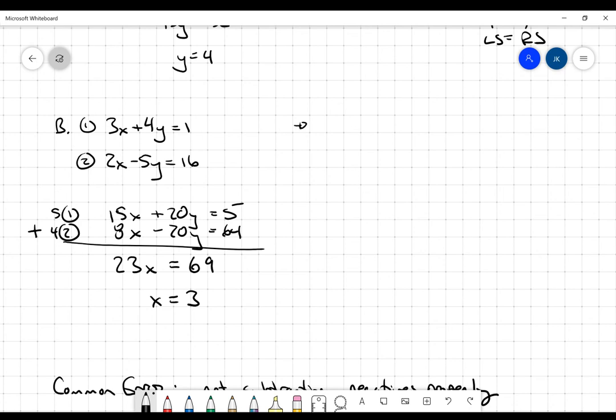So now I can take that and I can plug that result here. And I might go back into equation 1 again. So let x be equal to 3. 3 times 3 plus 4y is equal to 1. 9 plus 4y is equal to 1. So that's 4y is equal to negative 8. Y equals negative 2.